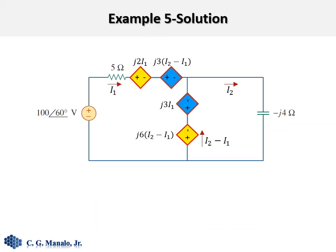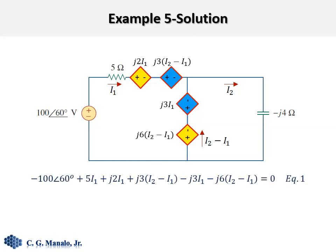This is the final version of the circuit. Based on this equivalent circuit we can now write the KVL equations. Following standard rules for writing KVL, the left loop gives us equation 1, and the right loop gives us equation 2. We can solve these two equations to give us the answers for the mesh currents.